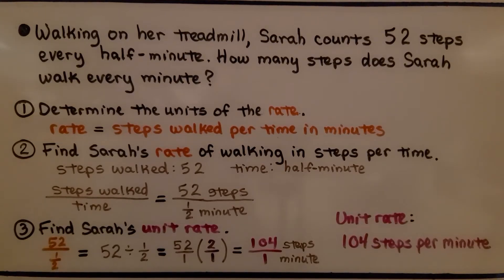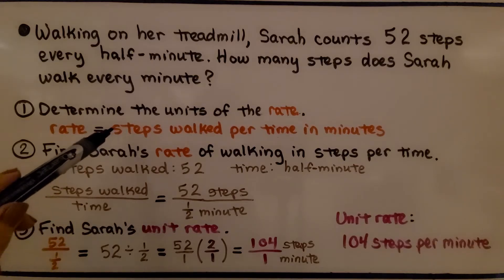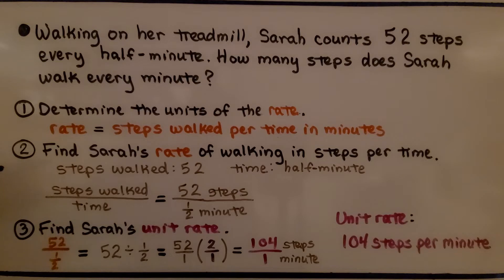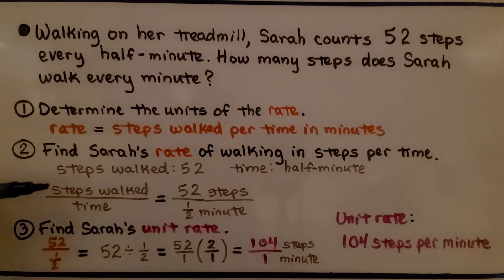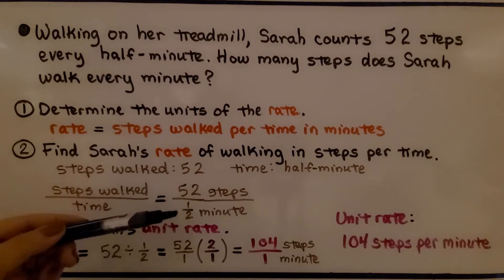Walking on her treadmill, Sarah counts 52 steps every half minute. How many steps does Sarah walk every minute? Now you might be able to solve this with mental math, but I used this easy problem to show you the steps. We determine the units of the rate. The rate is the steps walked per time in minutes. We find Sarah's rate of walking in steps per time. Her steps walked is 52. The time is half minute. We have the steps walked over the time. So we're going to do the steps walked divided by the time. We do 52 steps divided by half minute.